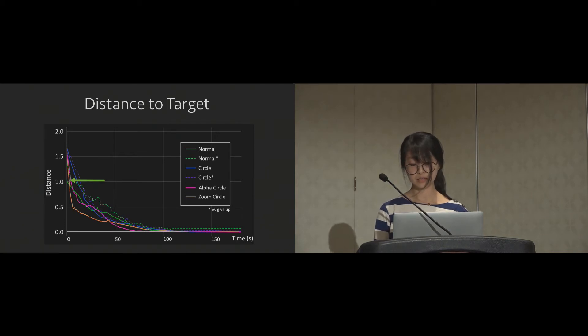Note that the green solid line in the normal mode starts at the distance much lower than others. It suggests that the user that starts far from the target are more inclined to give up.